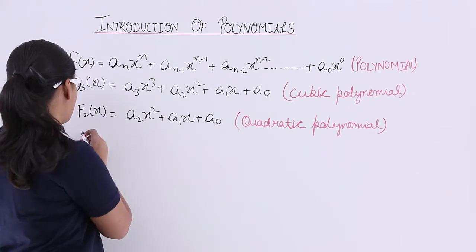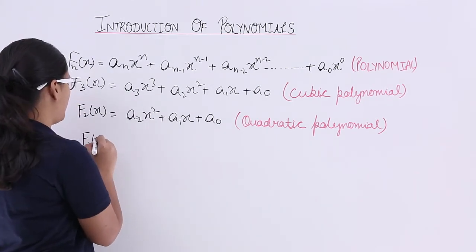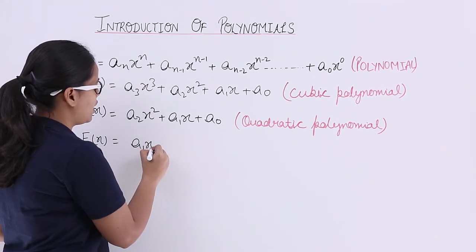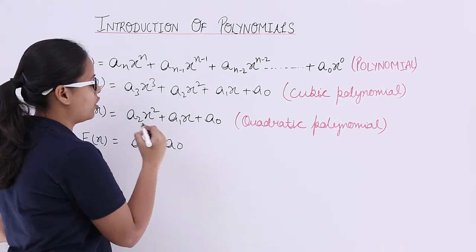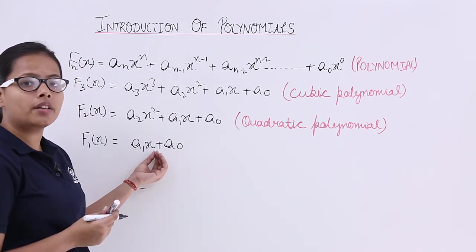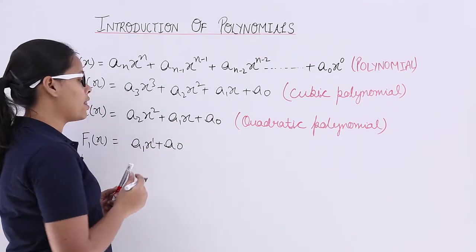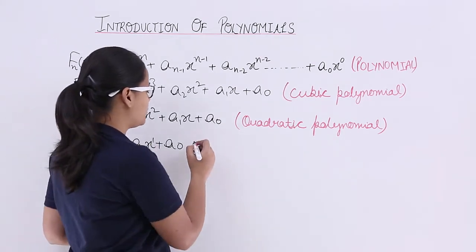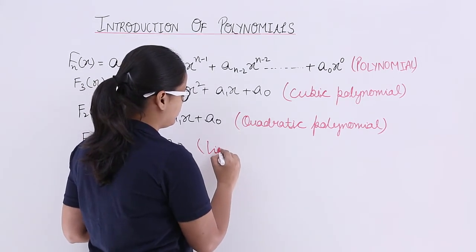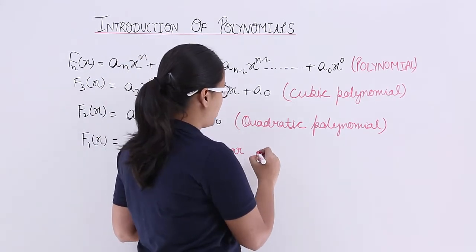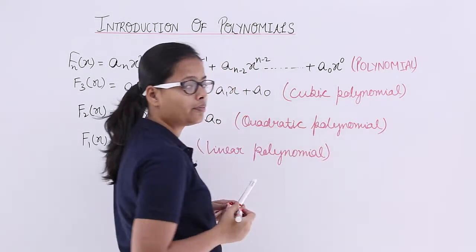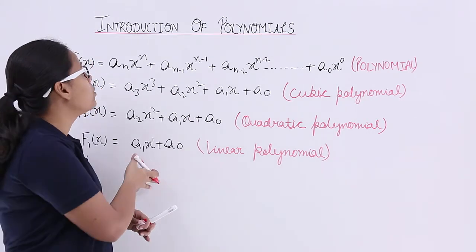For n = 1, f(x) = a1x + a0. Here you can see the highest degree of x is 1, that's why this polynomial will become a linear polynomial.